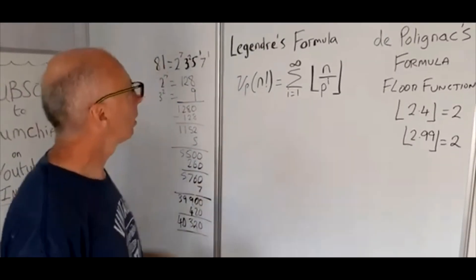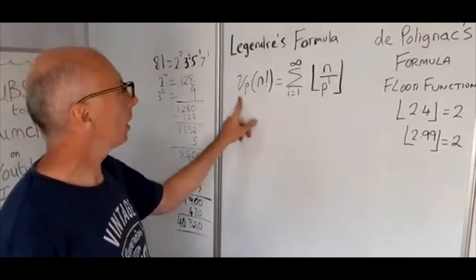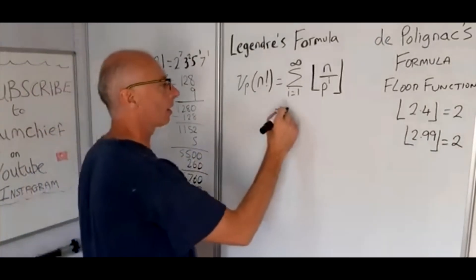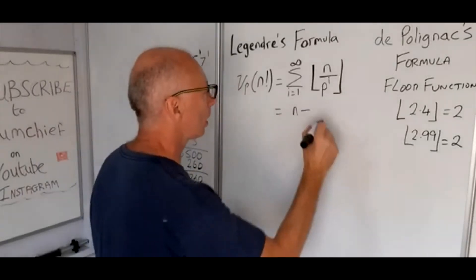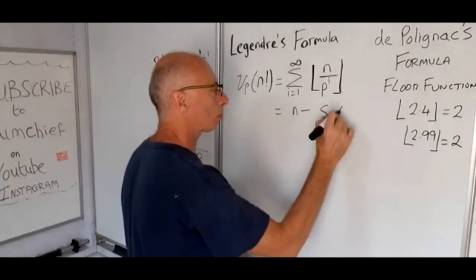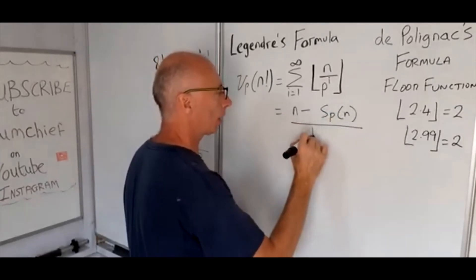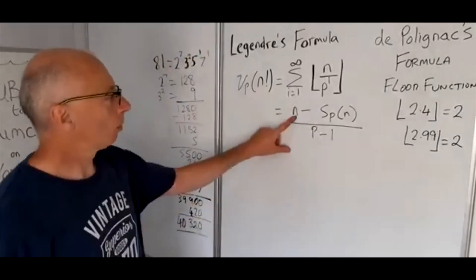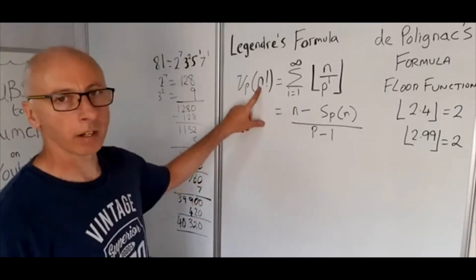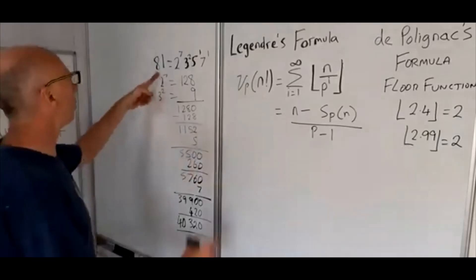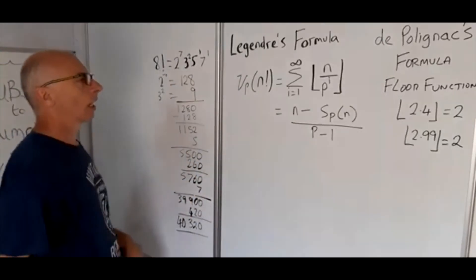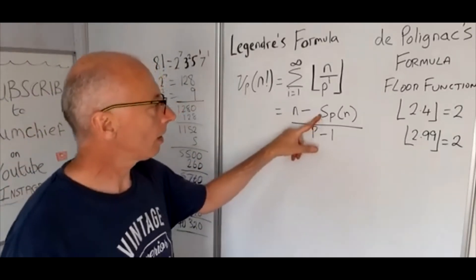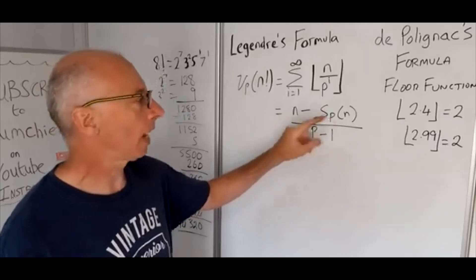There is an alternative formula for this function here, the p-adic value of n factorial. And what it says is this: n minus s subscript p of n divided by p minus 1. So what does that mean? Well we know what n is, n is our n factorial, so like in this case here it was 8 factorial. p is the prime number that we're concerned with.